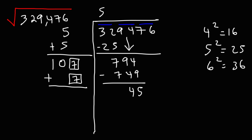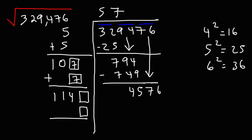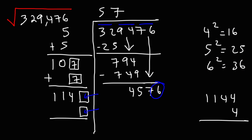On the left, we add 107 plus 7, which is 114. We add another box and bring down the 76, so we have 4576. 1140-something times something equals 4576. We know that 1000 times 4 gives us 4000, so 4 is the best number to go with. Also, the fact that this ends in 6 means it could be a 4 or 6, since 4 squared ends in 6. But 1000 times 6 gives 6000-something, so we don't want 6. 4 is the best option.